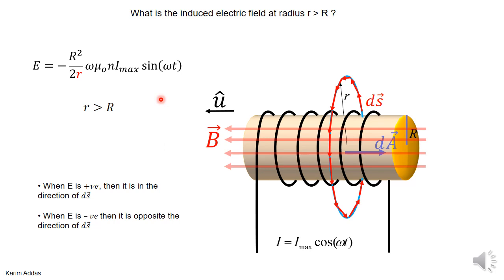So this is the final result for the electric field at radius r, where r is bigger than the radius of the cylinder. The dependence on r is 1/r. Then there are constants, and the sine(ωt) changes as time goes on. When the sine is positive, the overall term is positive but there's a minus sign out front, so the electric field is negative — meaning it's opposite the direction of the ds vectors. When the sine is negative, the electric field becomes positive, in the same direction as ds.